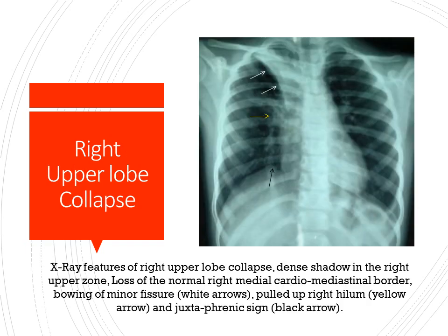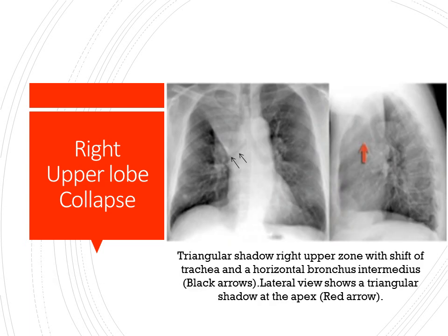This is the X-ray of the right upper lobe collapse where you can see the bowing of the minor fissure, elevation of the right hilum, and the juxtaphrenic sign — that is tenting of the right dome of the diaphragm — apart from a solid shadow in the right upper zone. Another X-ray shows the right upper lobe collapse where you can see the horizontal shape of the intermediate bronchus on the right side.